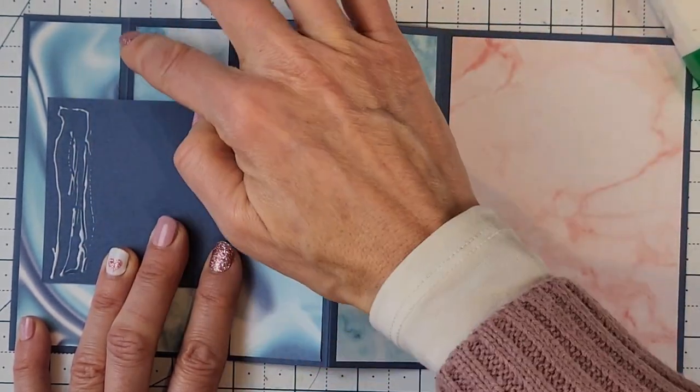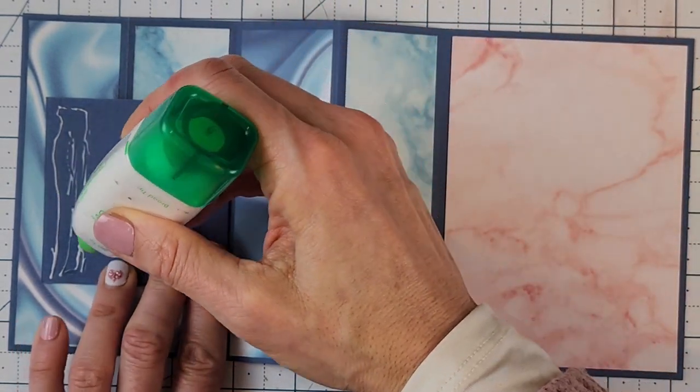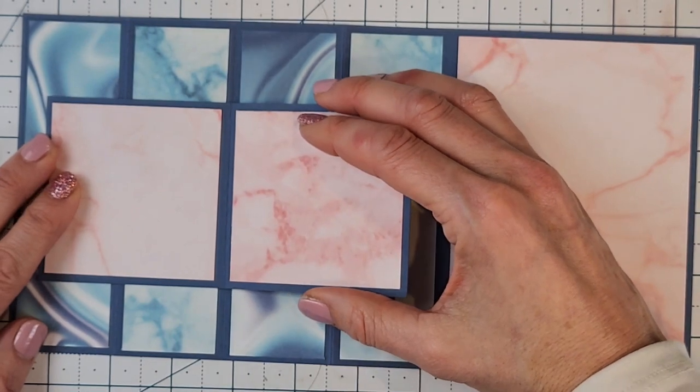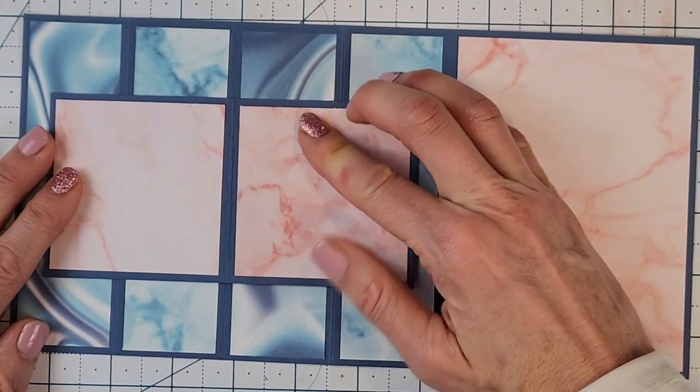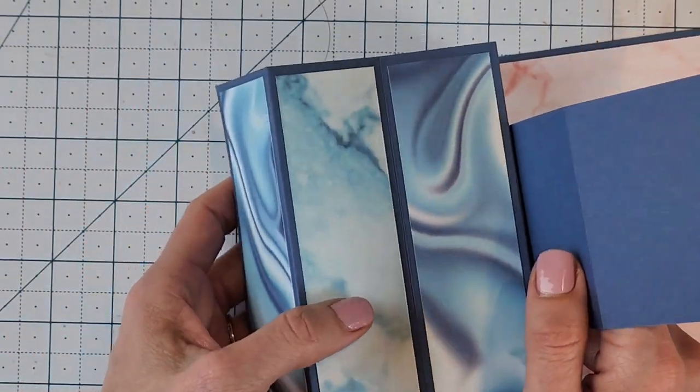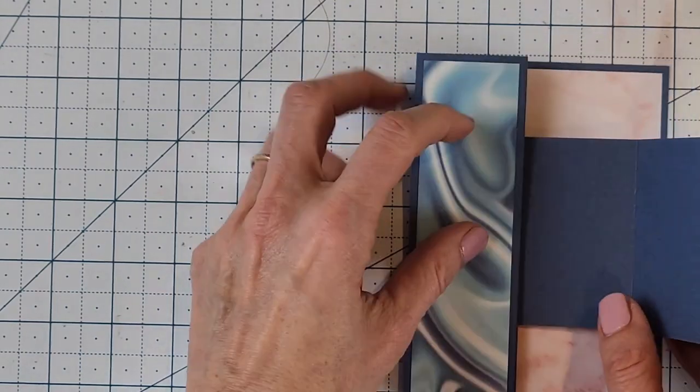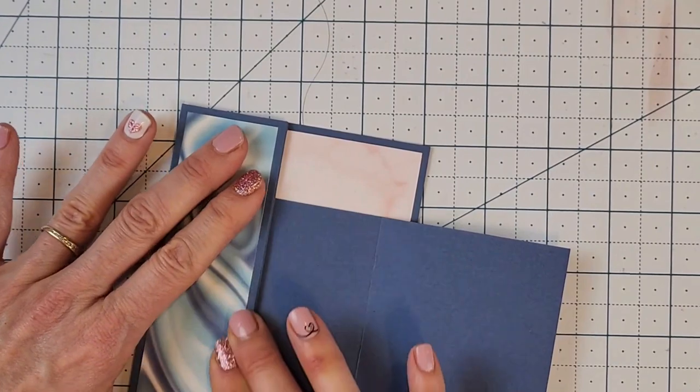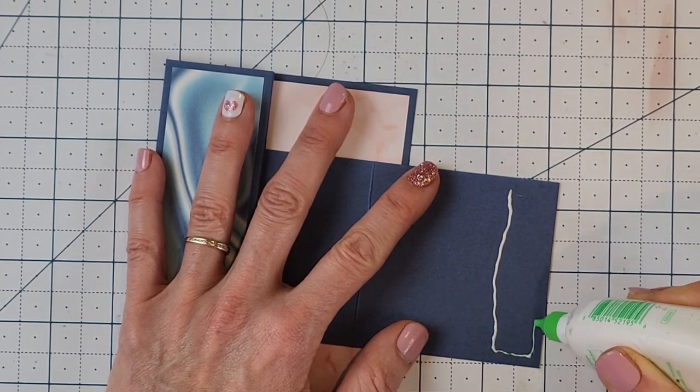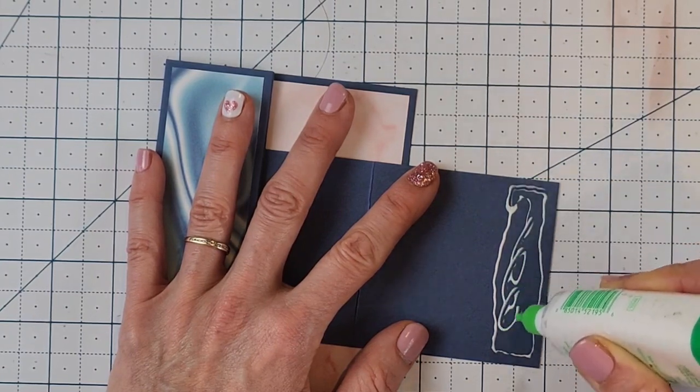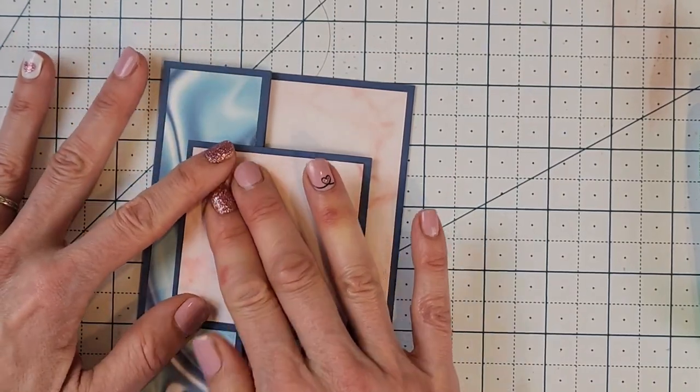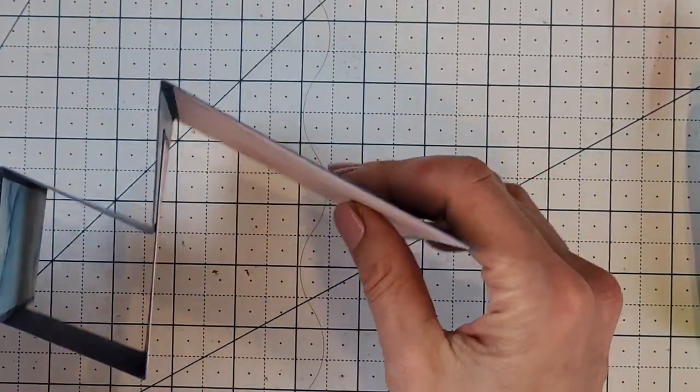And you can use the other score line here as a guide. Then open that panel up. Again, keeping it centered, place that one down. Let that set for a second. Open that up, and then you'll do the same thing for this panel here. Now if you find that it's easier to use tear and tape or your Seal Plus or your Stampin' Seal, then that certainly will work as well. There you go.